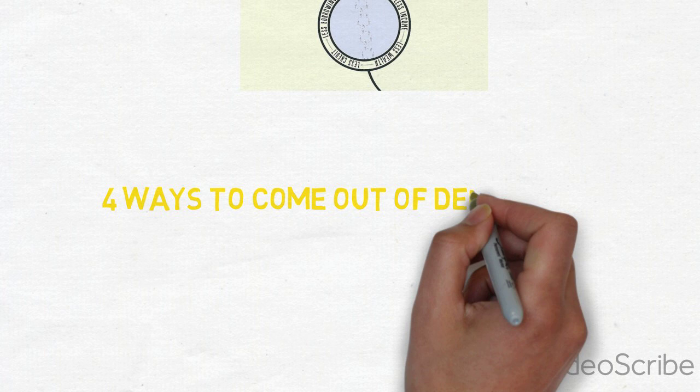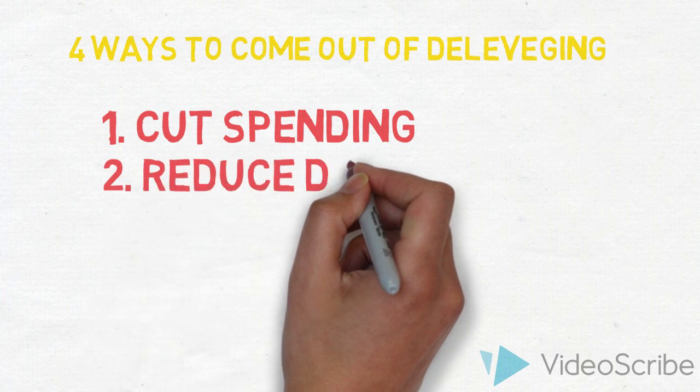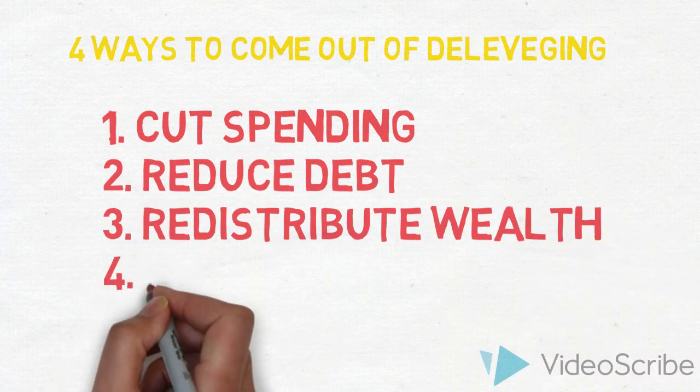There are 4 ways to come out of deleveraging. 1. Cut down spending. 2. Reduce debt. 3. Redistribute wealth. 4. Print money.